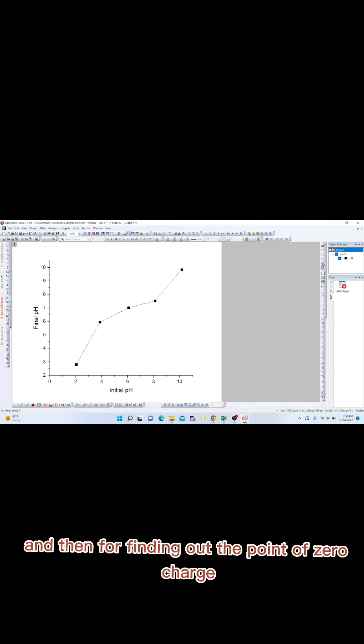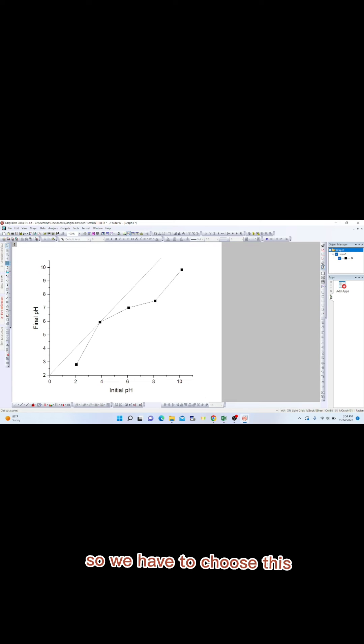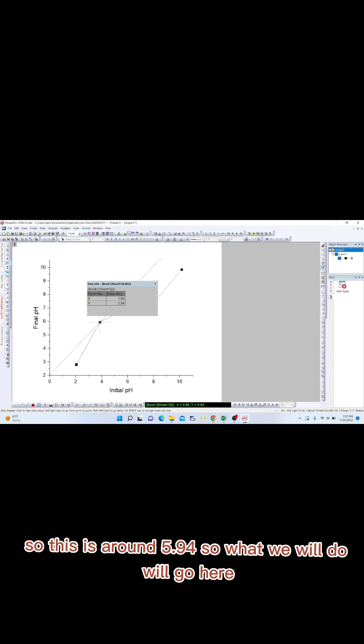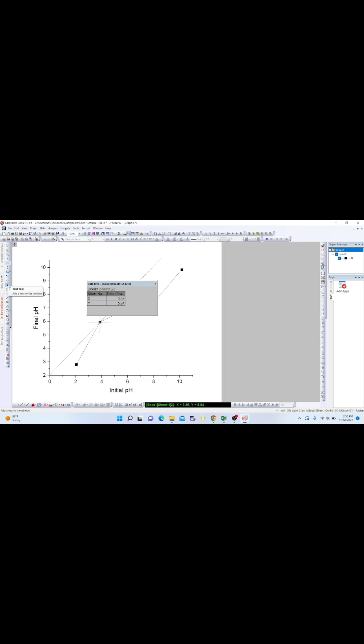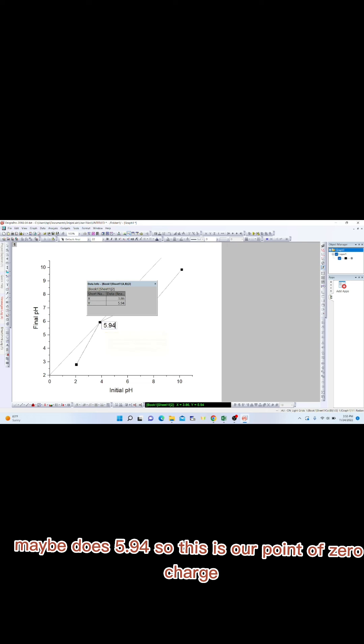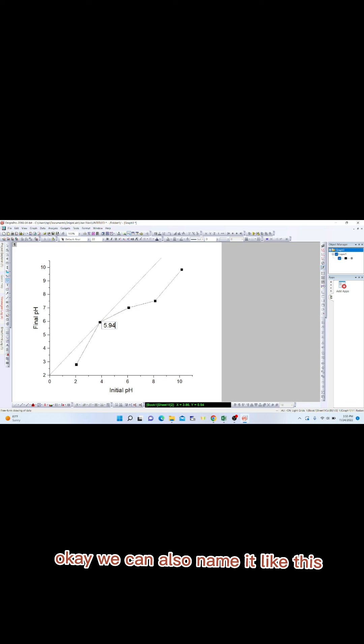For finding out the point of zero charge, what we'll do is take a line and draw from the origin. This is our point of zero charge. This is around 5.94. So we will name it as 5.94. This is our point of zero charge. I hope this is clear.